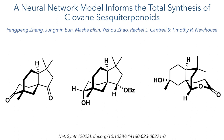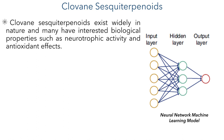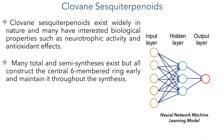Clovane sesquiterpenoids exist widely in nature in both marine and terrestrial organisms. Some of these compounds have been reported to have interesting biological properties such as neurotrophic activity and antioxidant effects. There are many total and semi-syntheses existing in the literature, but all share a common strategy where the central six-membered ring is constructed early and maintained throughout the synthesis. This strategy limits the scope of modifications that can be made to the B-ring and therefore prevents structure-activity relationship studies from being carried out on this section of the molecule.